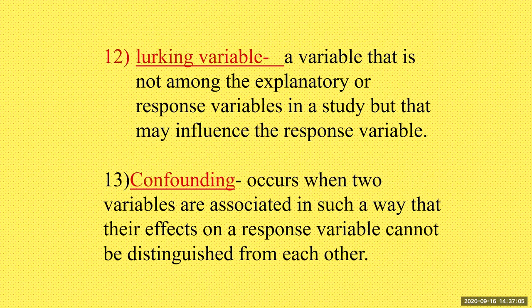Some more definitions — make these flashcards. A lurking variable is a variable that is not among the explanatory or response variables in a study, but it may influence the response variable. A confounding variable occurs when two variables are associated in such a way that their effects on a response variable cannot be distinguished from each other.